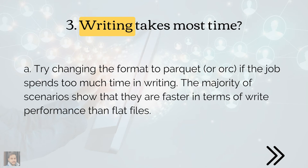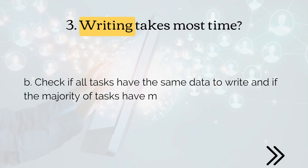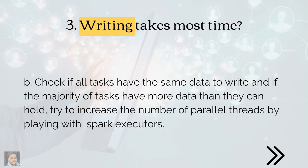The first scenario is that the job is taking a lot of time in writing. There are two ways to optimize this. First, if you are writing to a flat file, change it to Parquet, ORC, or another advanced format, if your use case allows. Writing in Parquet is super fast due to its structure — you can see performance improvement of 70 to 80 percent in some scenarios. Second, check if all the tasks writing to files have sufficient data. You may want to increase or decrease the number of partitions to reach an optimal number. This will give you optimal performance in terms of parallel writing.